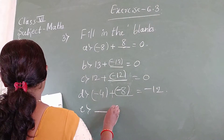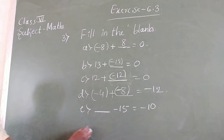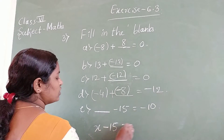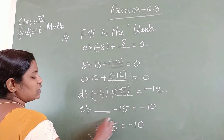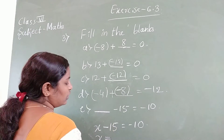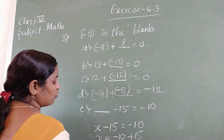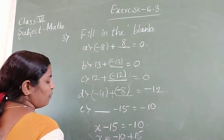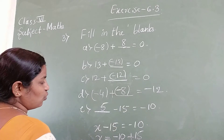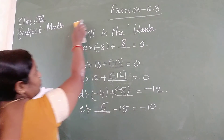Part E: dash minus 15 equals minus 10. Write x minus 15 equals minus 10. Send minus 15 to the other side — it becomes plus 15. Both are different signs, go for subtraction: 15 minus 10 equals 5. The big number sign is plus, so answer is plus 5. So 5 minus 15 equals minus 10. This is all about the third main question — fill in the blanks.